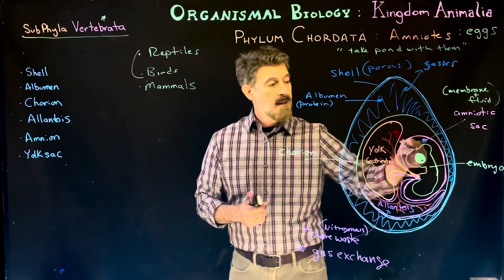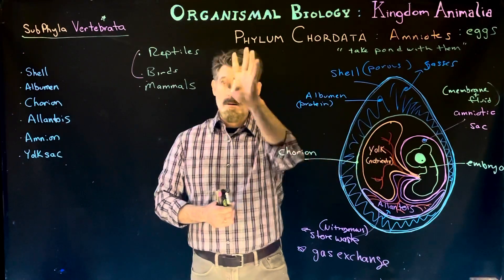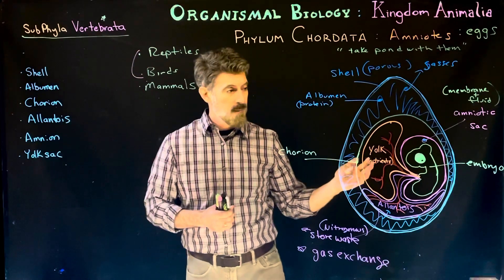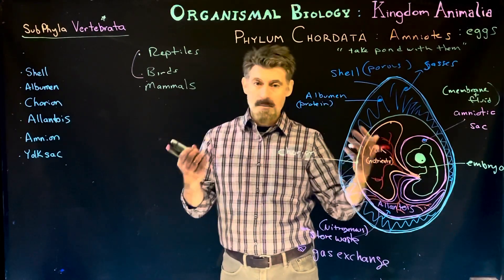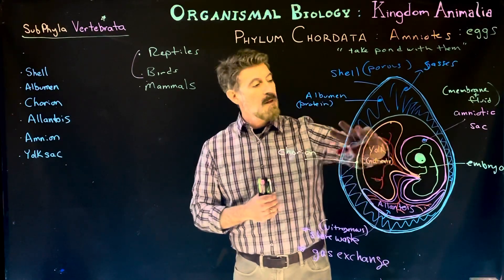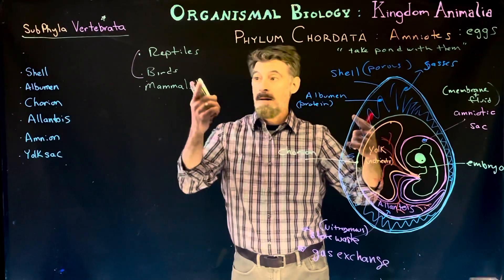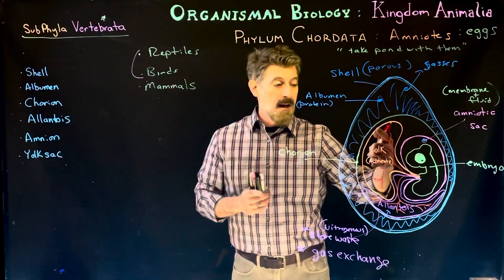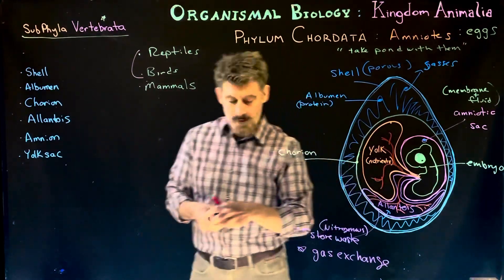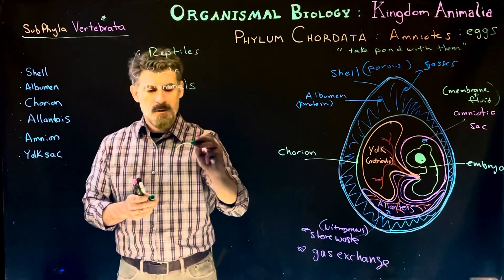To summarize the main structures: the embryo is inside amniotic fluid, which provides protection — this is consistent across all groups including all types of mammals. The amniotic sac is the same across all egg layers and all mammal types. In all egg layers, the yolk provides nutrients and the allantois handles gas exchange.